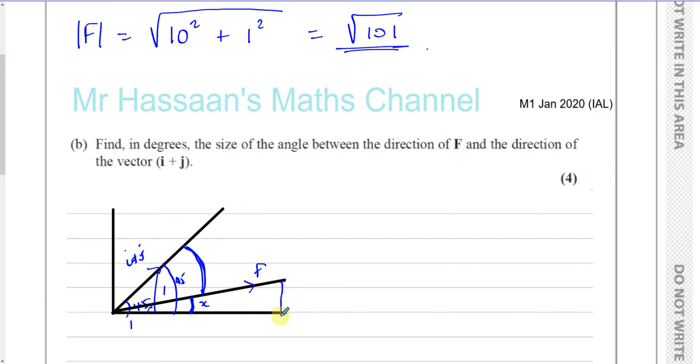So, I know for angle X, this is 10i, so this is 10, and this is 1j, so this is 1. So, the angle X, the tan of angle X is opposite over adjacent. X is equal to inverse tan of 1 over 10.